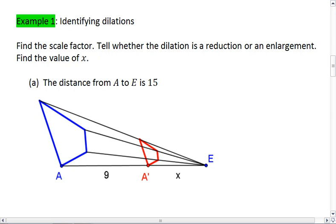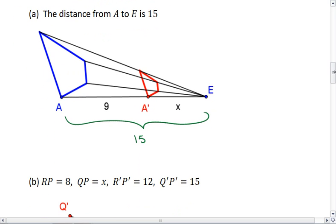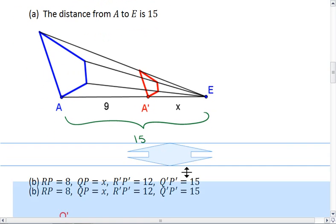In this first example, the distance from A to E is 15. Try to work this out on your own first and then resume the video when you're ready to check your answer for this first one.